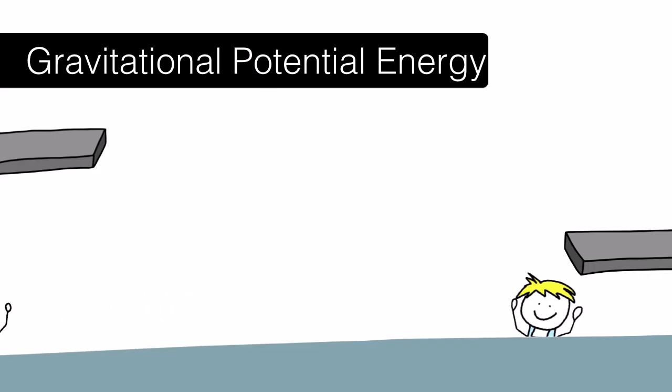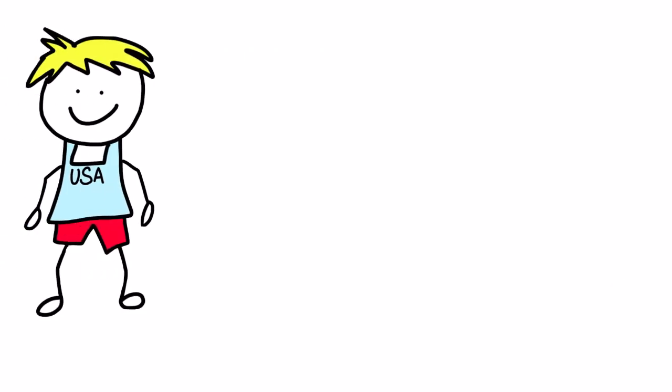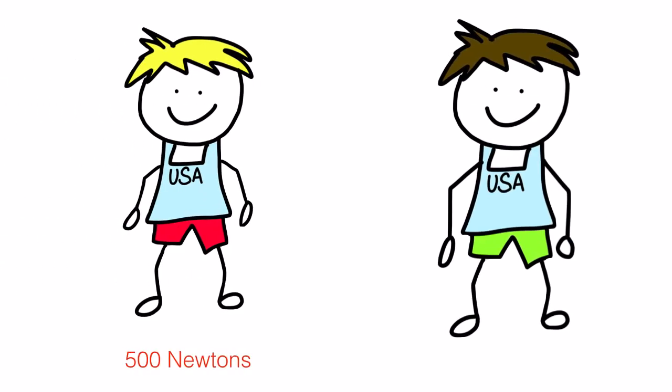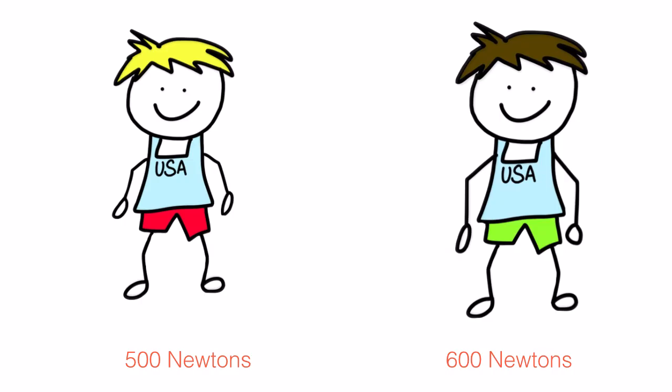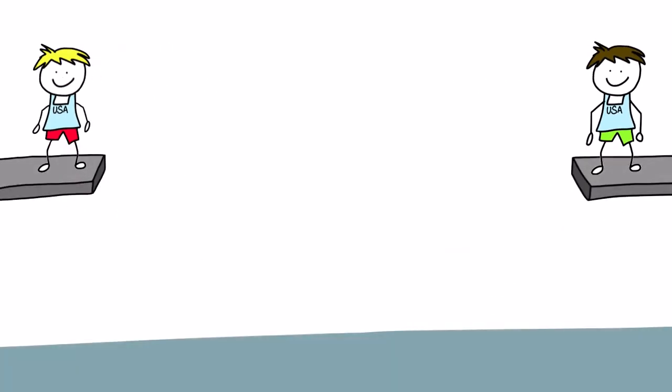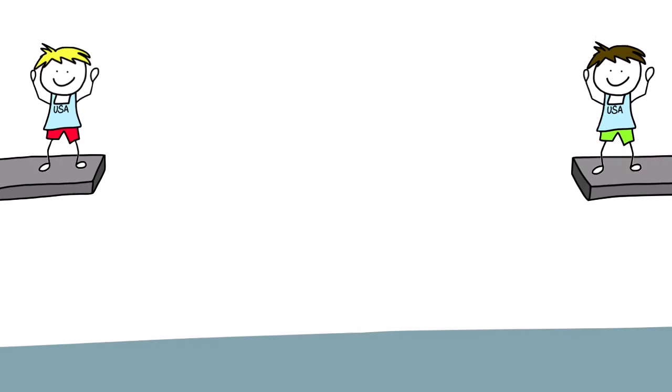Potential energy can also be affected by the weight of an object. This time, each diver is the same distance from the pool. However, the diver in the red trunks weighs 500 newtons, and the diver in the green trunks weighs 600 newtons. The diver in the green trunks has the potential to cause a greater splash because he weighs more.